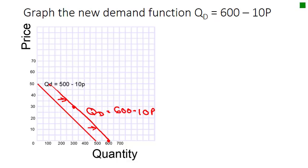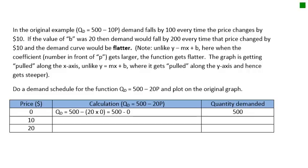In the original example QD = 500 - 10p, demand falls by 100 every time the price changes by $10. If the value of b were 20, then demand would fall by 200 every time price changed by $10, and the demand curve would be flatter.